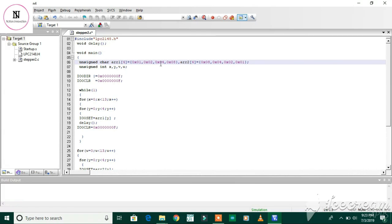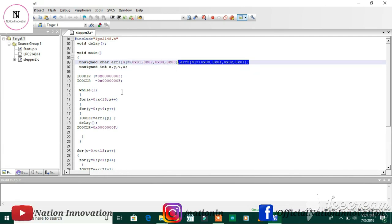The first array is for the clockwise rotation of the stepper motor and the second array is for the anti-clockwise rotation of the stepper motor. We are declaring some variables.